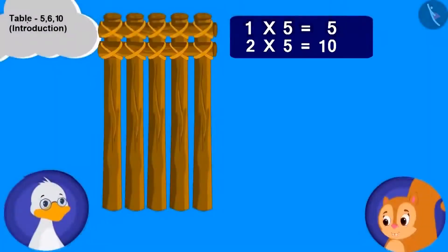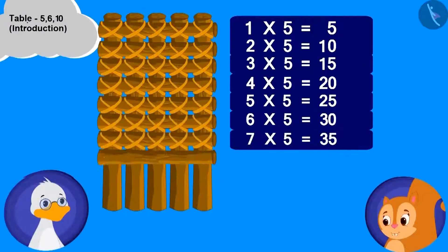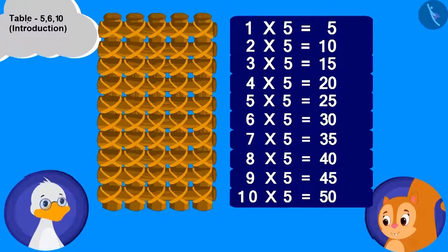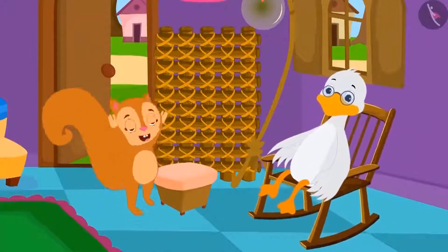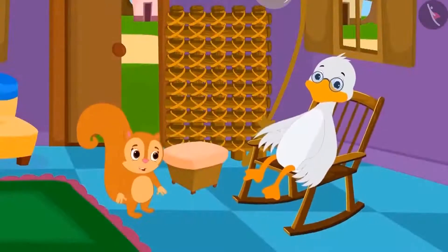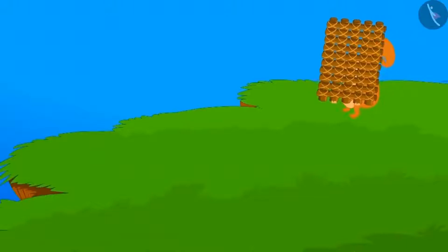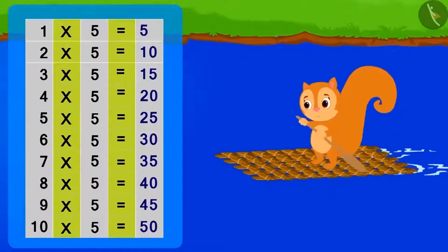This is very easy. Just keep adding the horizontal woods and keep counting the total joints. Your boat and table both will keep building. Chanda started dancing happily. Chanda thanked uncle and went with her unique boat to sail in the river. Chanda was humming the table of 5 while sailing in her boat.